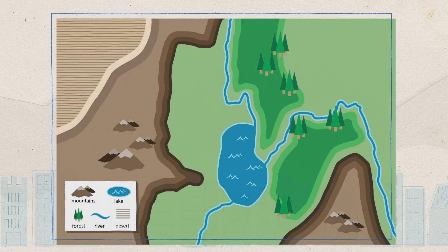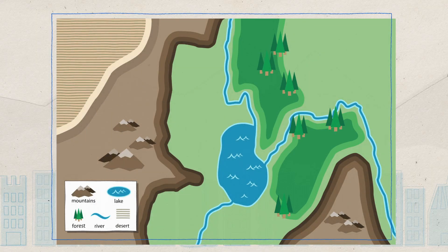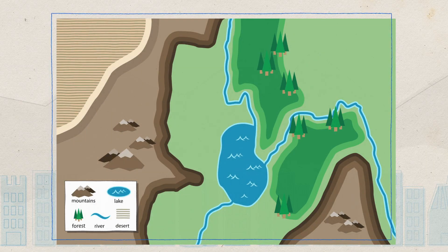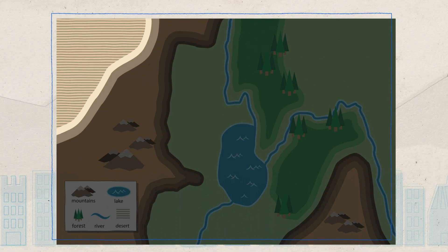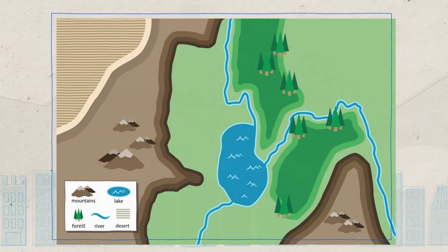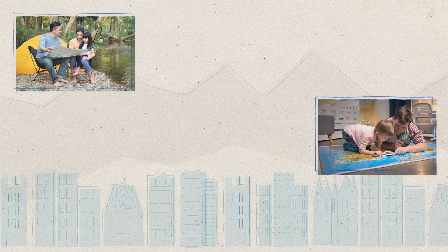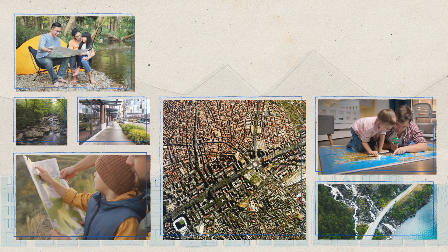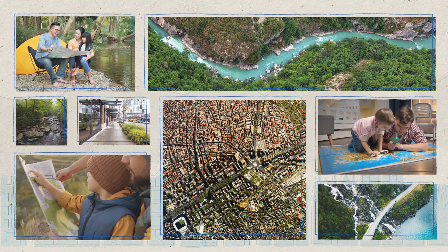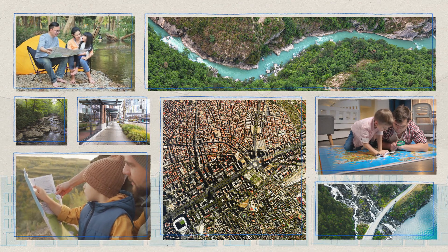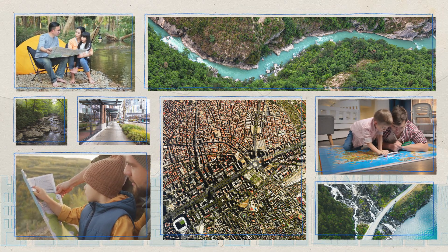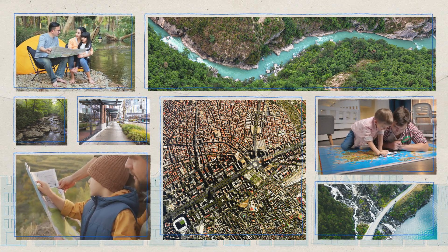This map has one more land feature. The tan shape represents a desert. There is a desert on the other side of the mountain. Using maps can help you better understand the world around you. What land and water features are in the area where you live? Maybe you can create a map of your own.